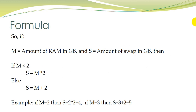If you go with the formula: let M equal the amount of RAM in GB and S equal the amount of swap in GB. Then if physical RAM is less than 2 GB, swap S equals M multiplied by 2. Otherwise, swap S equals M plus 2.